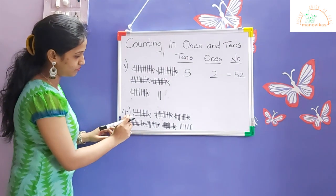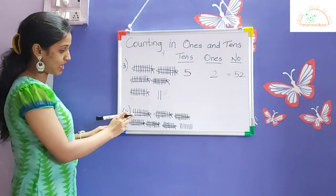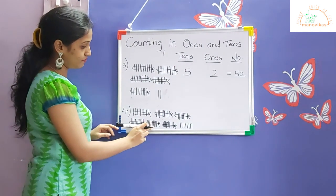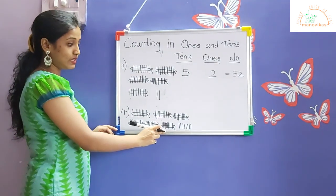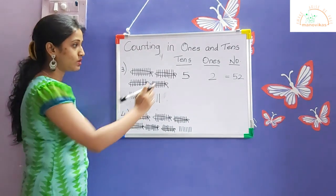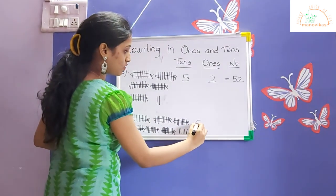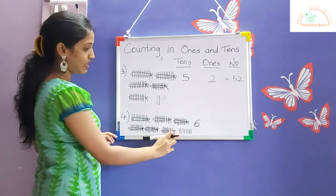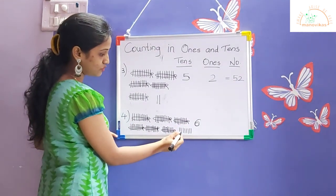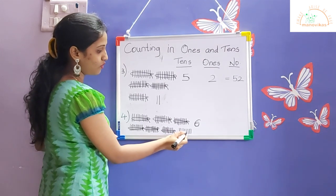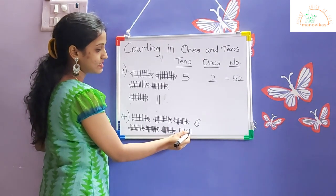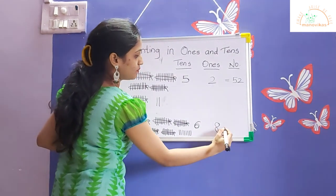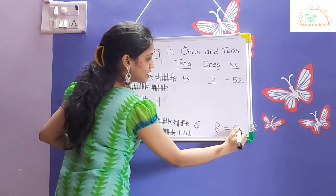Now the fourth one: we count the bundles — one, two, three, four, five, six. These six bundles make six tens, so we write six in the tens column. The remaining ones are one, two, three, four, five, six, seven, eight. So eight ones go in the ones column. Six tens and eight ones makes sixty-eight.